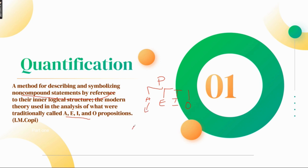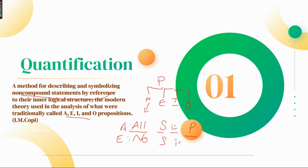A proposition is in the form of 'All S is P.' This is the standard form, which has a quantifier, subject term, copula, and predicate term. For E proposition, the form is 'No S is P.' Again we have a quantifier, subject, predicate term, and a copula as well.